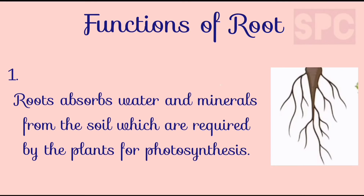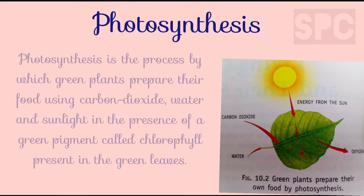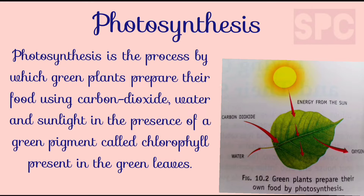Roots absorb water and minerals from the soil which are required by the plants for photosynthesis. Photosynthesis is the process by which green plants prepare their food using carbon dioxide from the air, water, and sunlight in the presence of a green pigment called chlorophyll, which is present in green leaves. During this process, oxygen gas is released and the food is prepared in the form of carbohydrates.